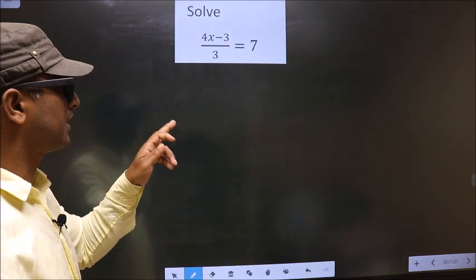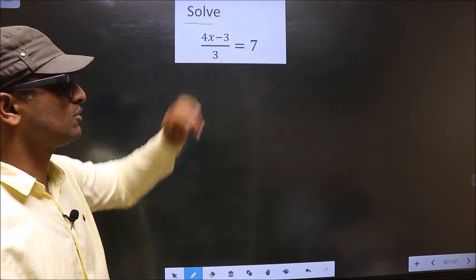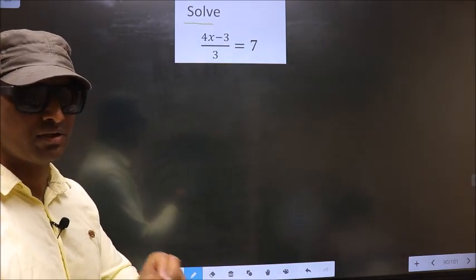Solve 4x minus 3 by 3 equal to 7. They told us to solve, so we should find the value of x.